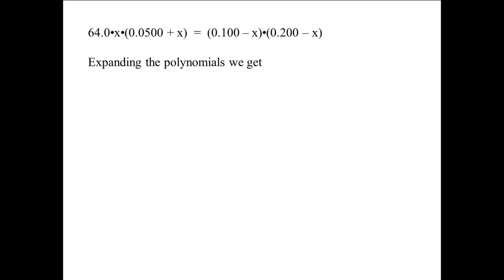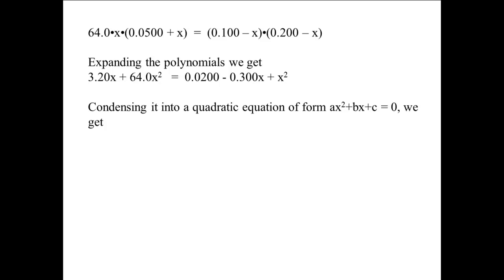Expanding the polynomials, we get 3.20X plus 64.0X squared equals 0.0200 minus 0.300X plus X squared. Condensing it into a quadratic equation of the form AX squared plus BX plus C equals 0, we get 63.0X squared plus 3.50X minus 0.0200 equals 0. Solving the quadratic equation, we get two answers.